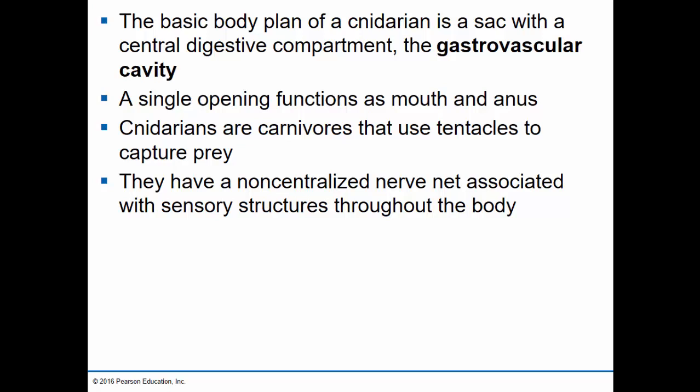Cnidarians also have a very simple, non-centralized nervous system. That means the nerves are found throughout the body and don't direct sensory signals into a particular area — so they're lacking a brain. The nervous system cells simply interact with stimuli and react appropriately without sending the signals to a more complex structure like the brain or the spinal cord.